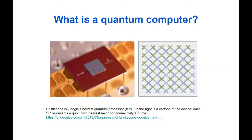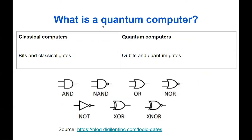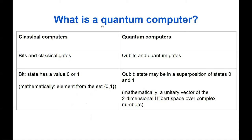Now we will learn how computations on quantum processors differ from classical computing. As you probably know, in classical computers we have bits and classical gates — we can implement any computation using basic logical gates such as AND or NOT. Similarly, in quantum computers we have qubits and quantum gates. So what's the difference?